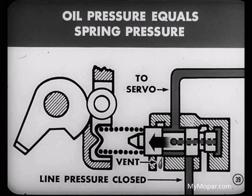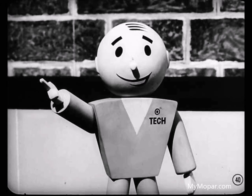At the same time, it opens a vent, which allows some of the oil to escape until the oil pressure against the valve is equal to the spring force. This applies additional oil pressure against the front servo piston. This throttle pressure varies from 14 pounds per square inch at idle to 90 pounds at full throttle, depending upon how wide the carburetor throttle is opened by the accelerator pedal.